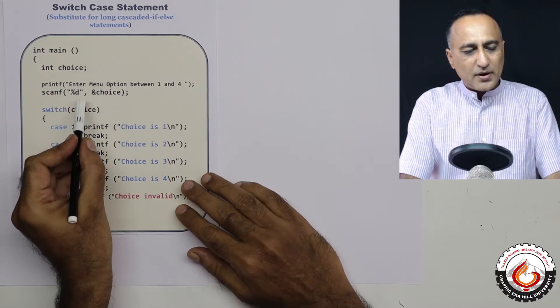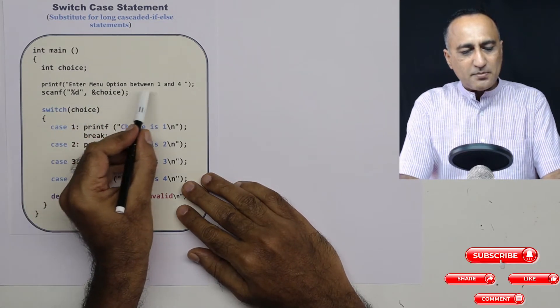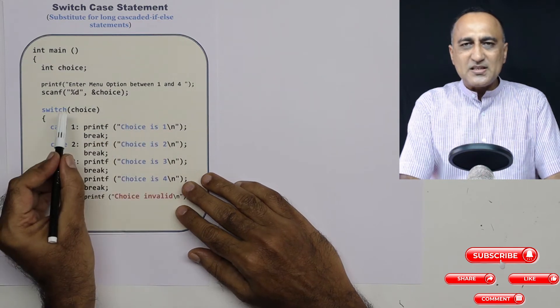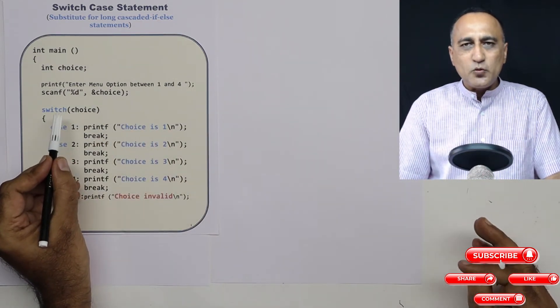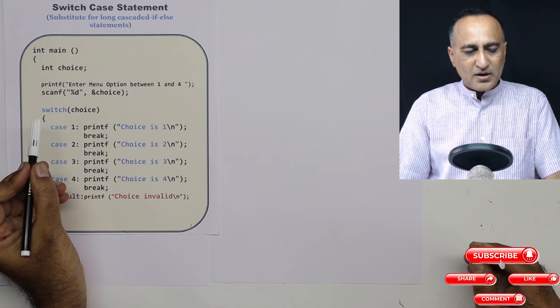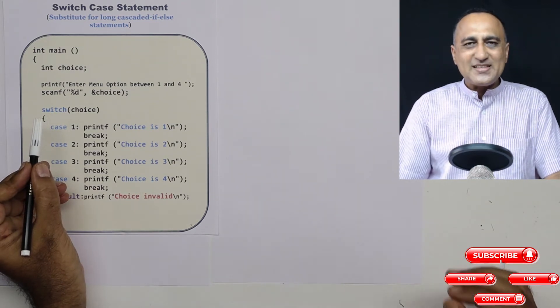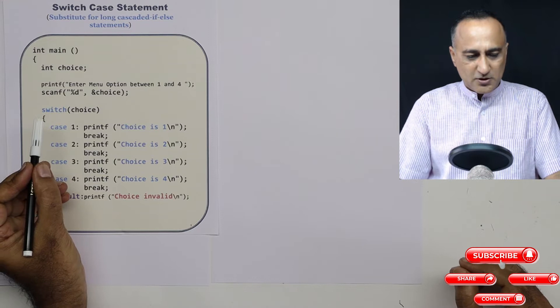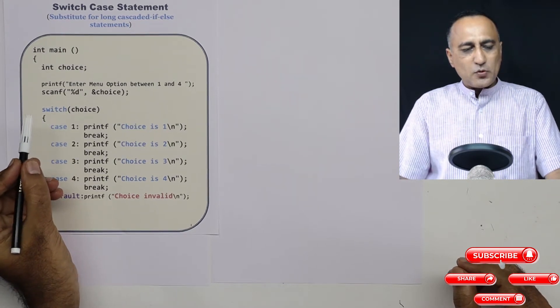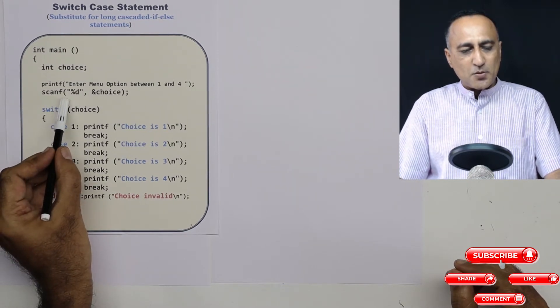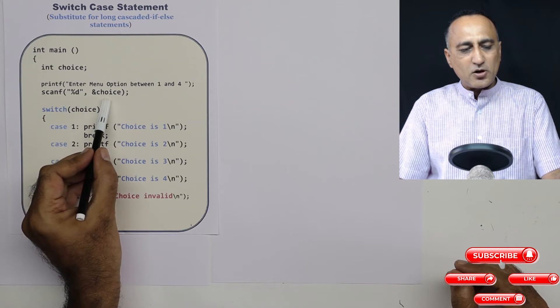I'm asking the user to enter a menu option between 1 and 4. That means the user can enter 1, 2, 3, or 4. If he enters any other option, it's going to say the message invalid option. So first what I'm doing is I'm asking the user to enter the menu option and I'm reading it into a variable called choice.